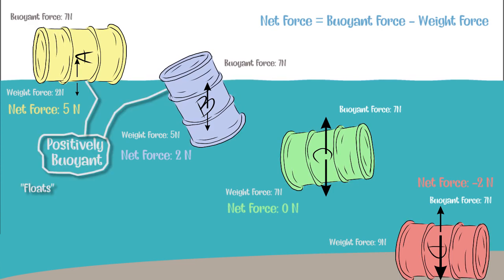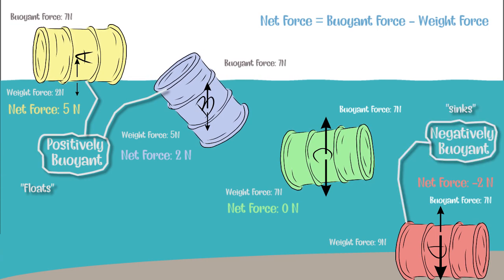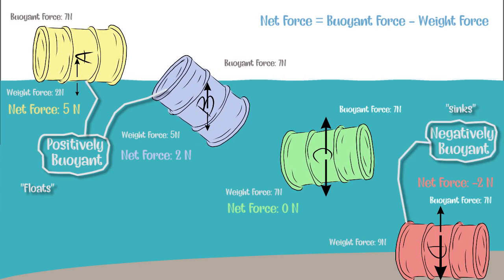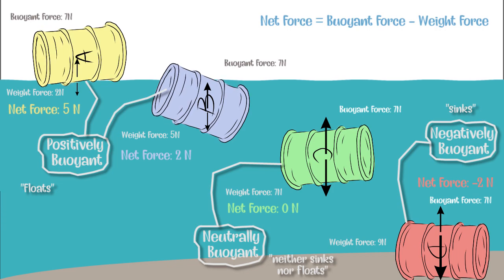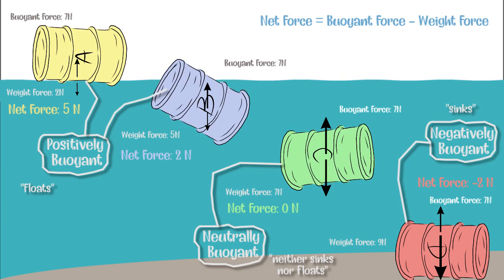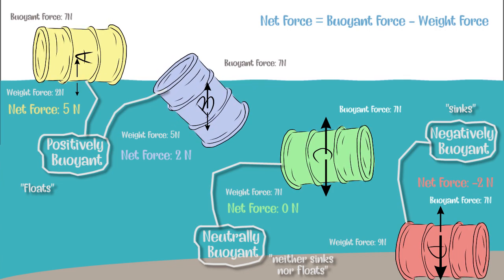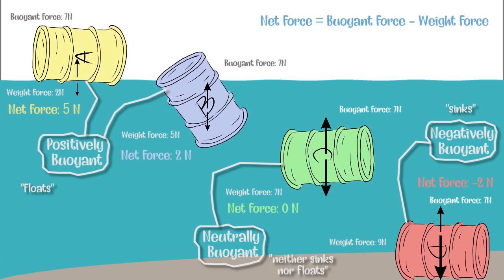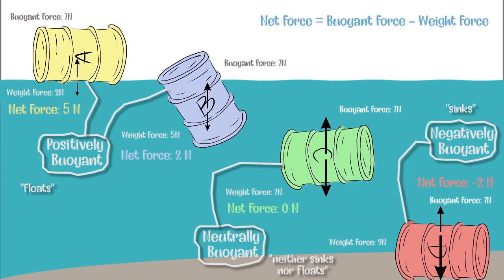If the net force is positive, the object rises, just as illustrated by objects A and B. If negative, the object sinks, just like D. And if zero, the object is neutrally buoyant, just like C — that is, it remains in place without either rising or sinking.